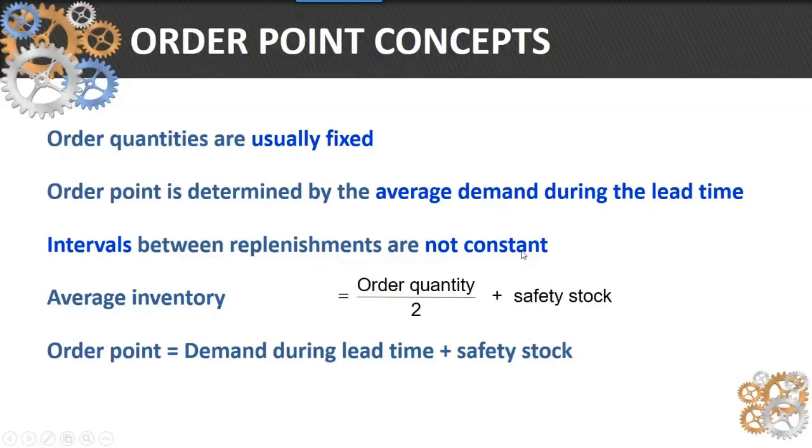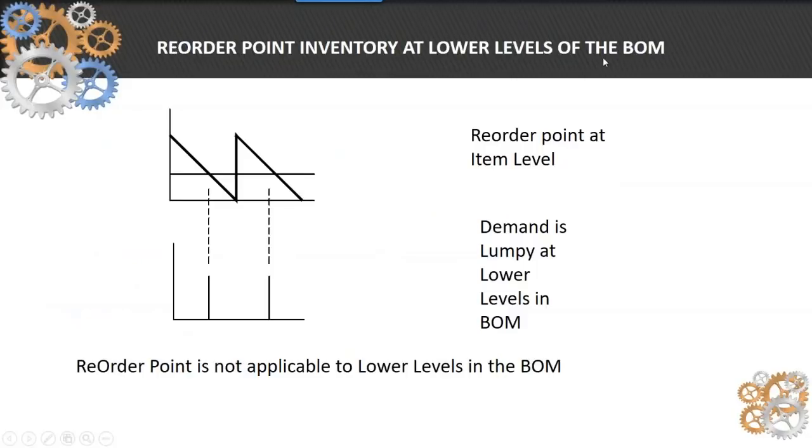The intervals between replenishments are typically not constant because that demand curve that we saw in the sawtooth curve is not necessarily constant and consistent. The average inventory is equal to the order quantity divided by 2 plus safety stock.